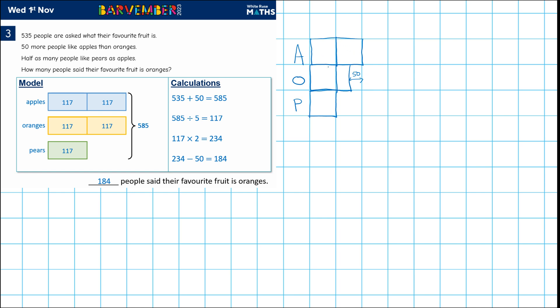which would give us one, two, three, four, five parts. So let's draw this then. So if we have 535 plus 50, okay, we are, this would give us the 585.